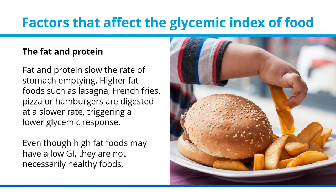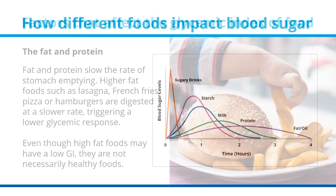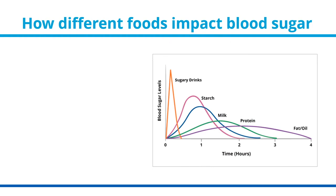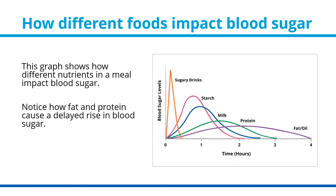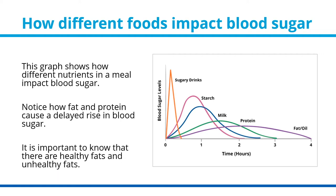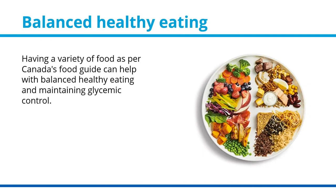This graph shows how different nutrients in a meal impact blood sugar. Notice how fat and protein cause a delayed rise in blood sugar. It is important to know that there are healthy fats and unhealthy fats. Having a variety of foods as per Canada's Food Guide can help with balanced healthy eating and maintaining glycemic control.